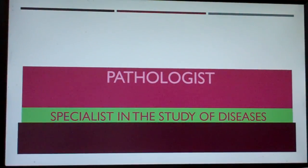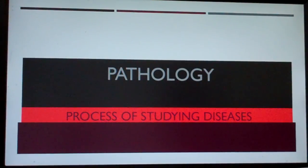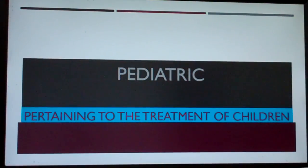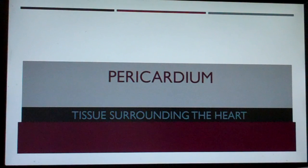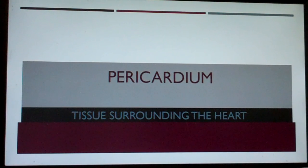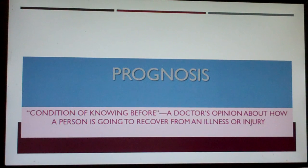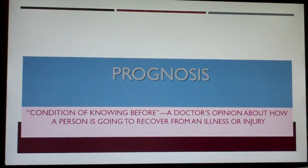Pathologist: specialist in the study of diseases. Pathology: process of studying diseases. Pediatric: pertaining to the treatment of children. Pericardium: tissue surrounding the heart. Prognosis: condition of knowing before — a doctor's opinion about how a person is going to recover from an illness or injury.